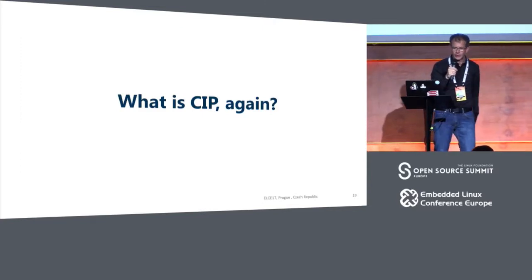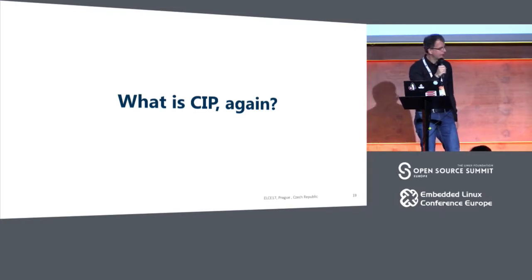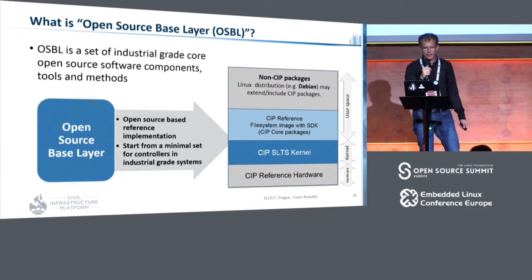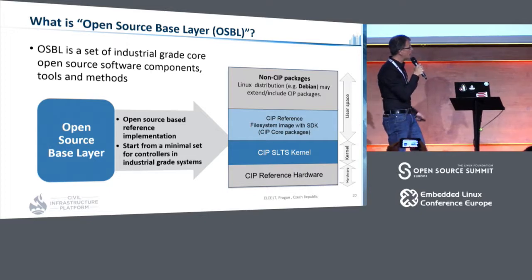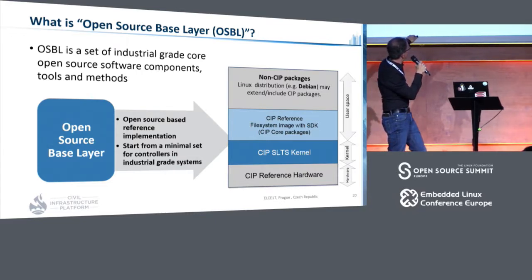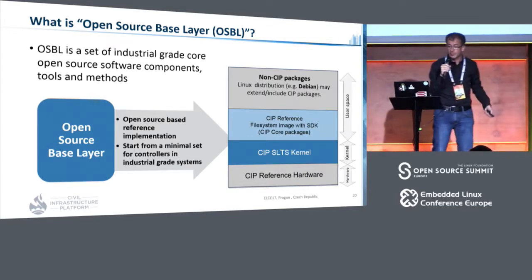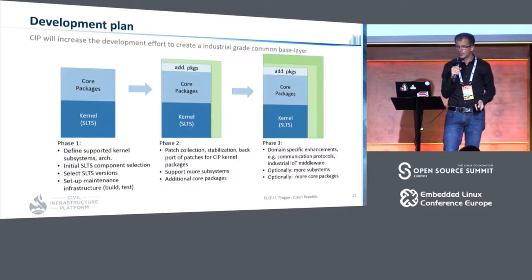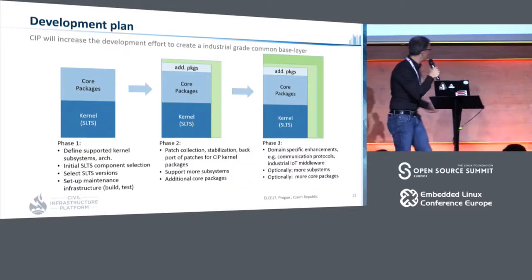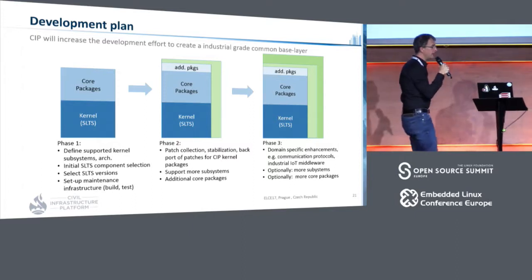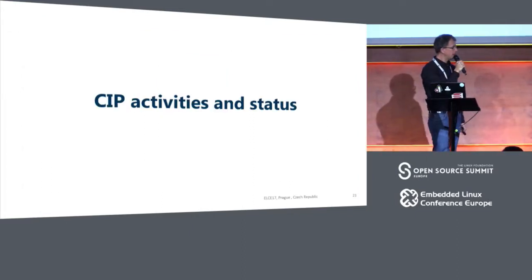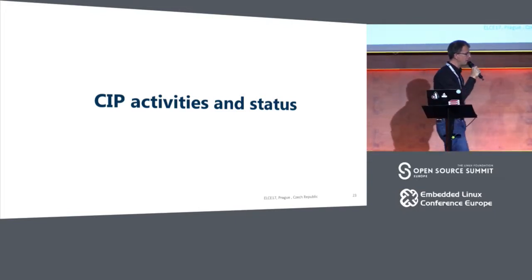What is the actual work going on? We started really bottom-up — we started with the kernel and set up what we call the super long-term supported kernel. We agreed on a kernel version and built up the infrastructure around this. Now we are building bottom-up, adding first packages which are the least common denominator that everybody needs — but it's much less than a distribution. The idea is to evolve this over the years, step by step adding additional packages, to really have a common base layer which can be used by everyone.